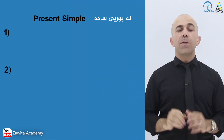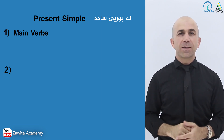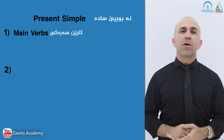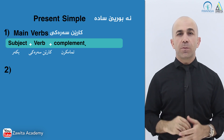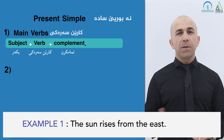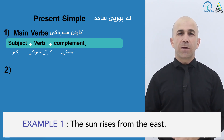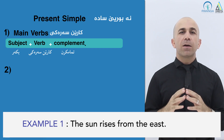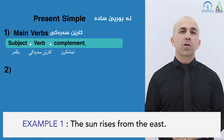We have two rules for the present simple. The first rule is about the main verb: the structure is subject plus verb plus complement. For example, 'The sun rises from the east' — this is something always true, so we use the present simple. The second rule is the subject with helping verbs.